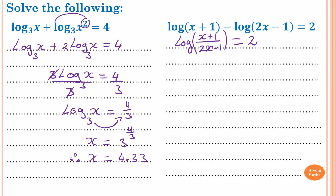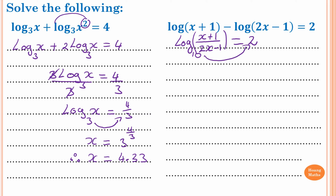Now, because it's log without a specified base, this means base 10. Log by default is log base 10. If you like, you can put 10 here. So to unlock it, this 10 just pushes the 2 up. So that is (x plus 1) over (2x minus 1) is equal to 10 to the power of 2. So 10 squared, which is 100. So I just write (x plus 1) over (2x minus 1) is equal to 100.